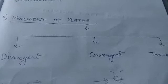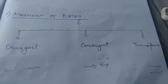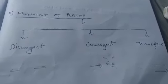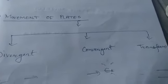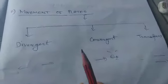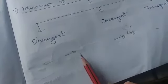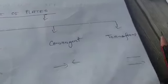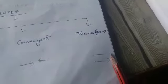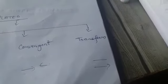There are three types of movements of plates: divergence, convergence, and transform. When two plates move away from each other, that is divergence. When two plates collide with each other, that is convergence. When two plates horizontally slide past each other, that is called transform plate movement.